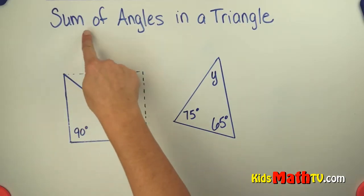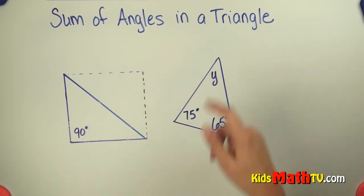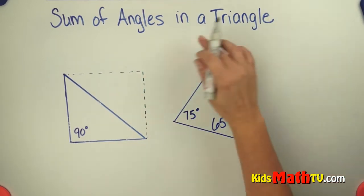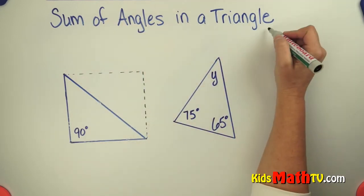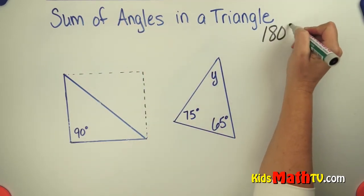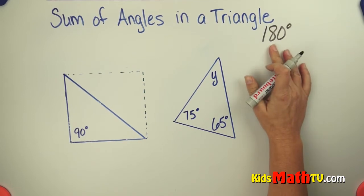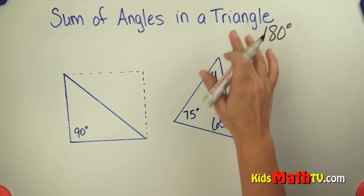In this lesson you will learn about the sum of the angles in a triangle. If you add all the angles together in a triangle, it will always be 180 degrees. That's the magic number for angles in a triangle.